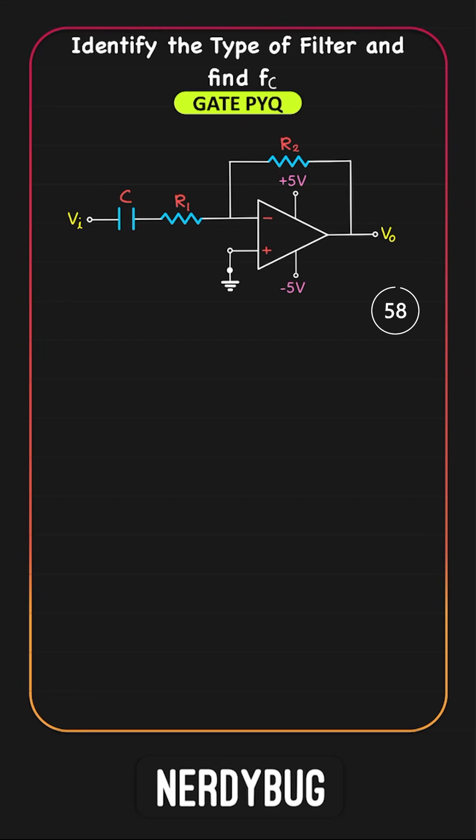Let us solve this GATE PYQ under 60 seconds. Capacitive reactance is 1 by j omega c. Using virtual ground concept, here we'll have 0 volt.